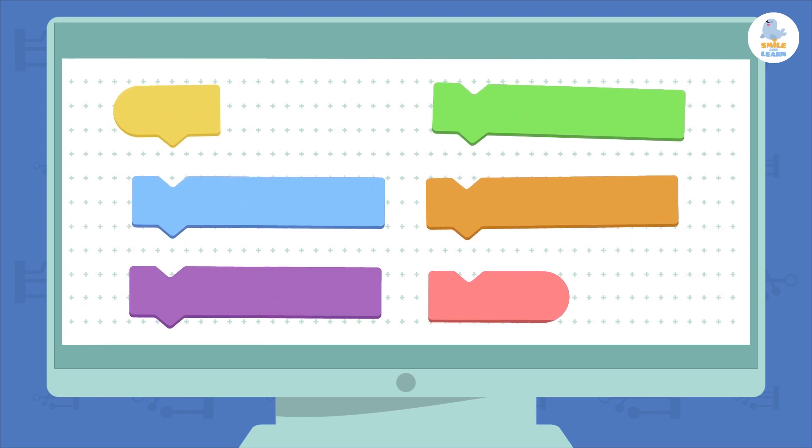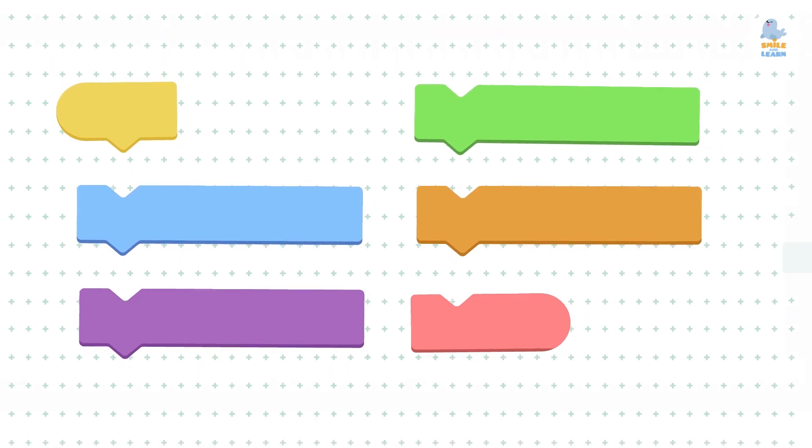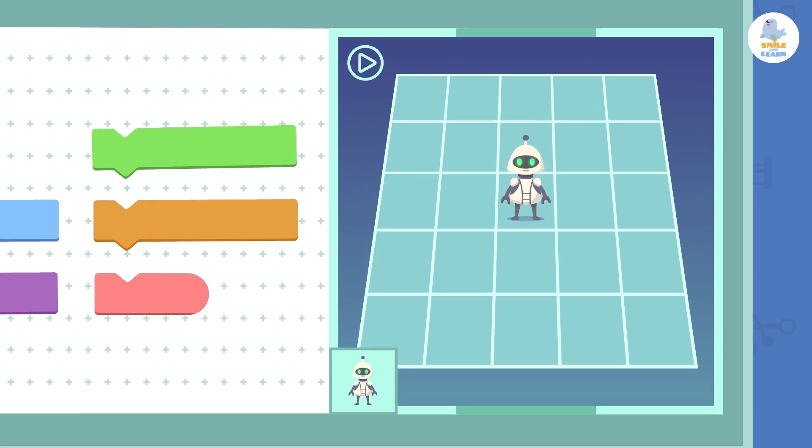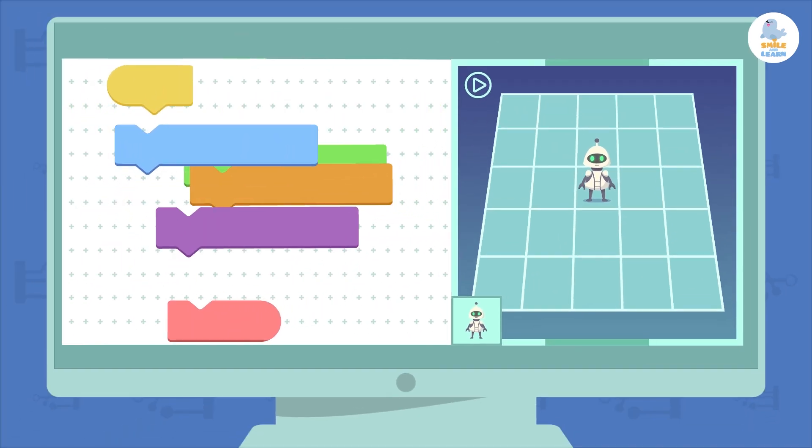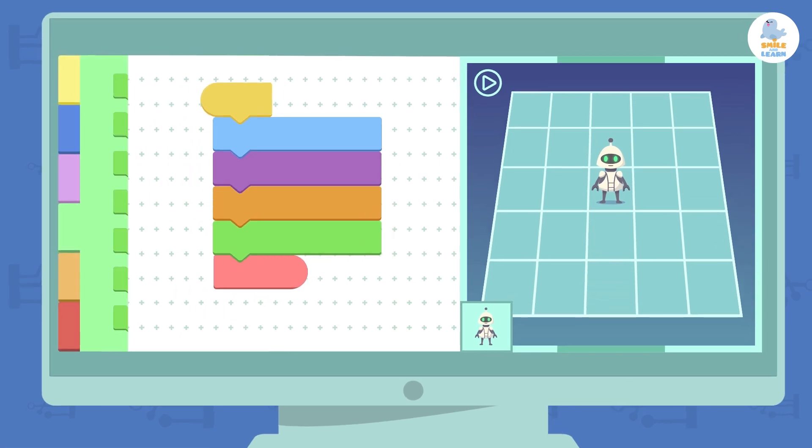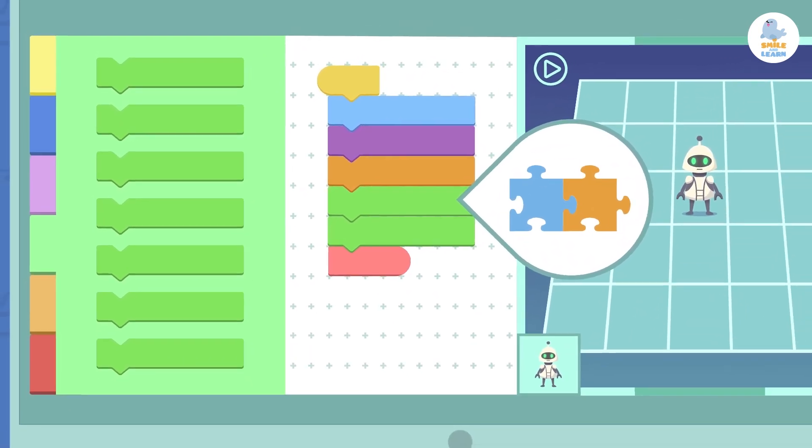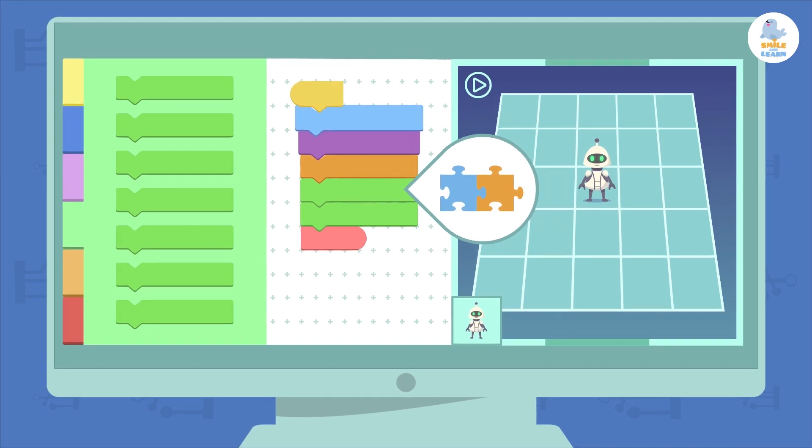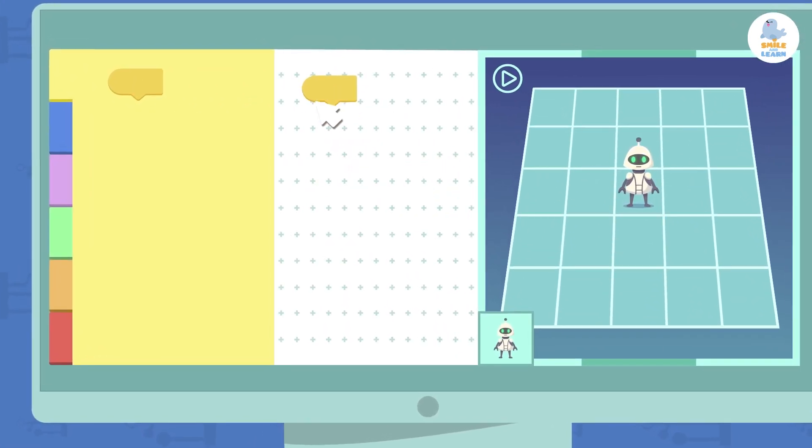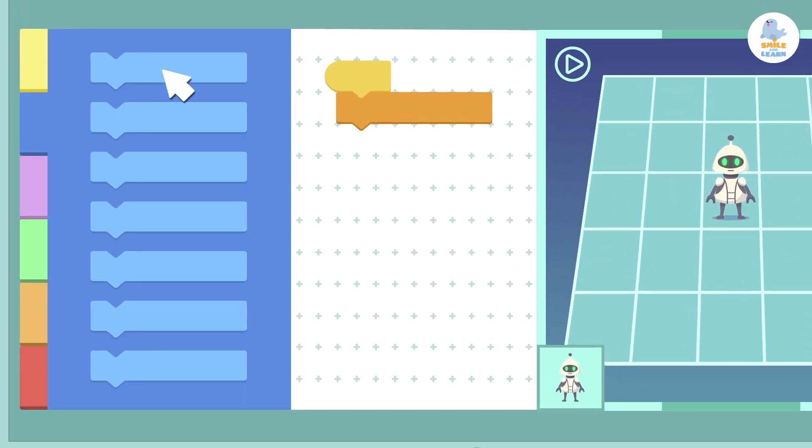Block coding uses colored pieces that contain commands that we give to something or someone, for example a game character. You can combine blocks in a sequence to send complex or easy instructions. The pieces fit together like a puzzle, so it's very easy to organize the instructions you're programming. In the schedule board you can combine different blocks. Here you will find all the necessary components that you can select to make fun projects.